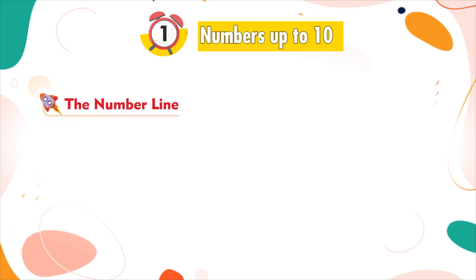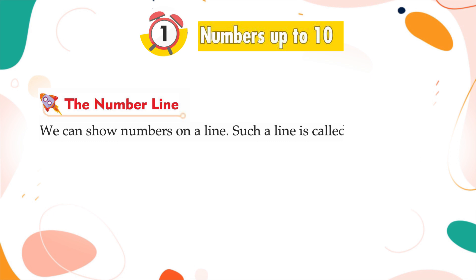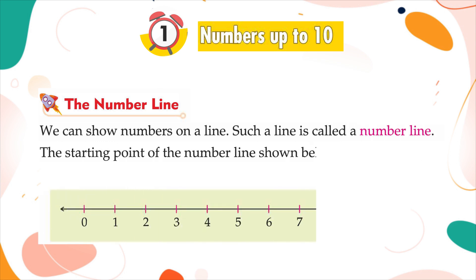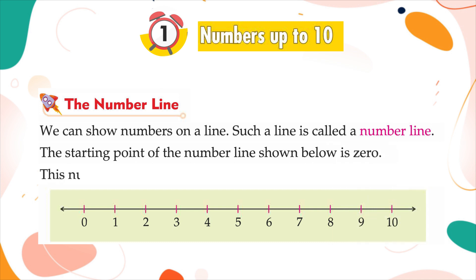The number line. We can show numbers on a line. Such a line is called a number line. The starting point of the number line shown is zero. This number line shows numbers from zero to ten.